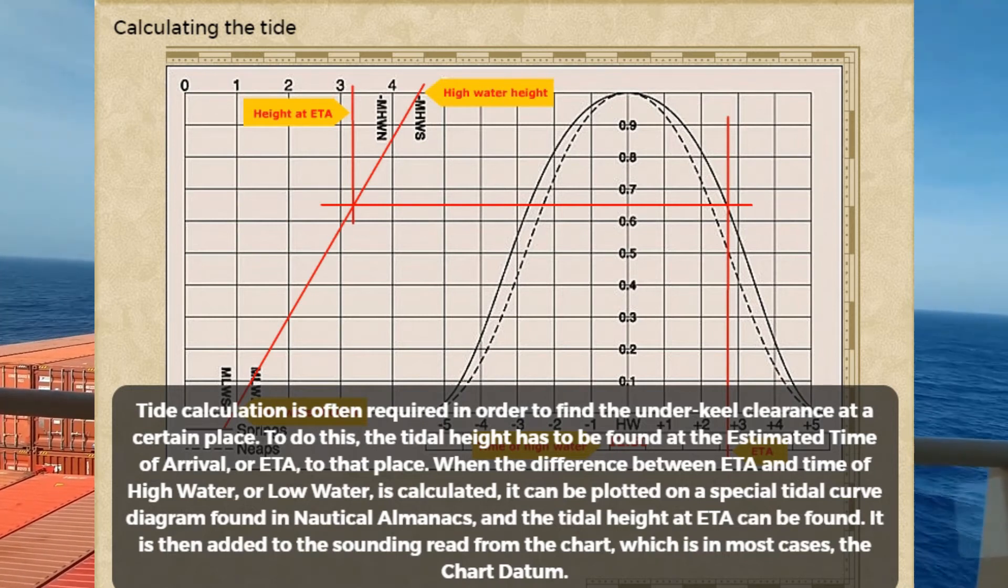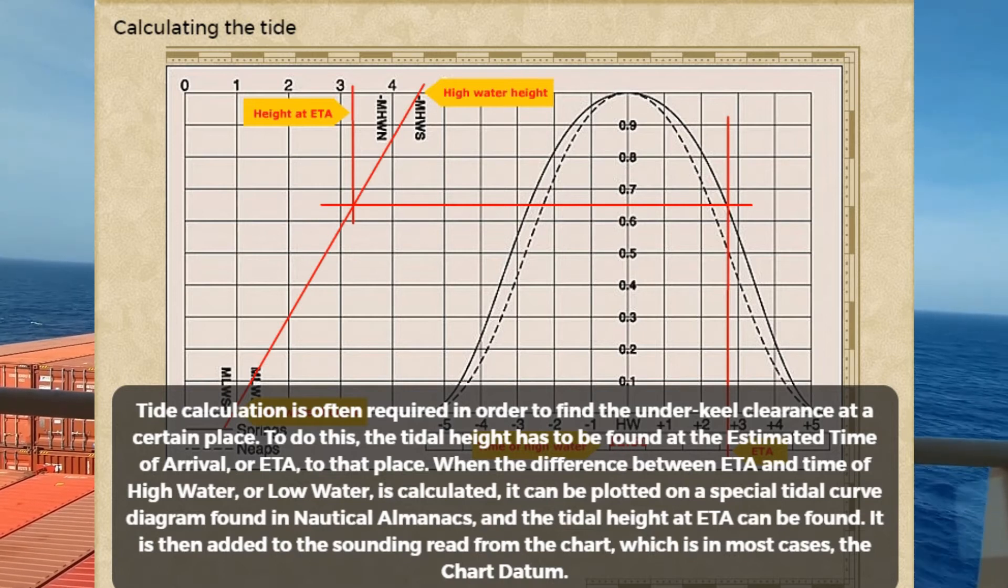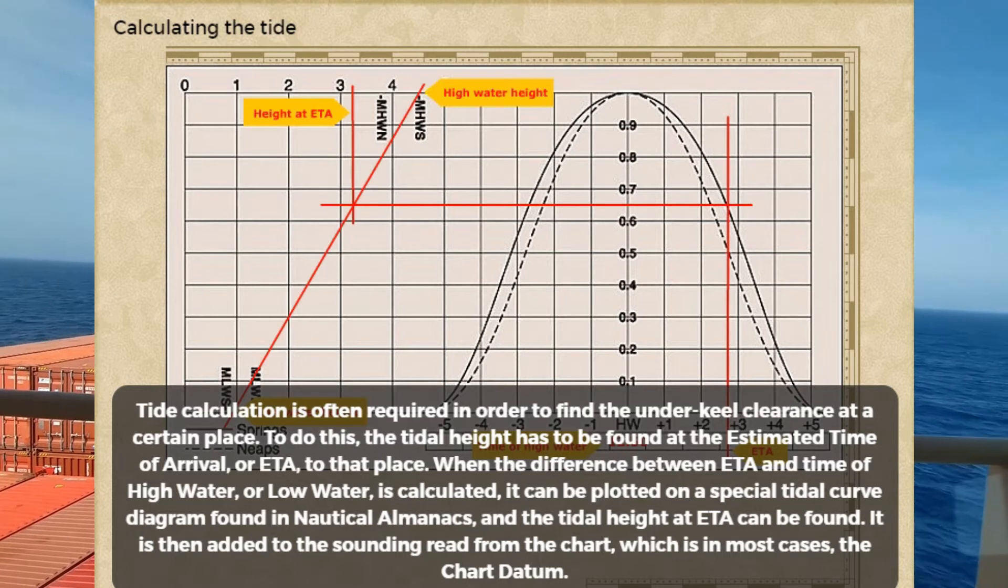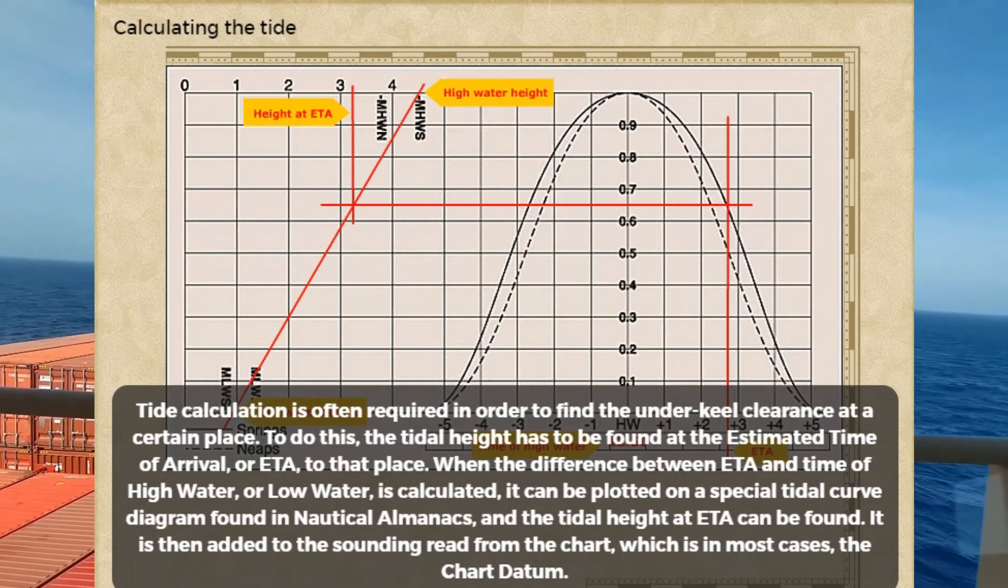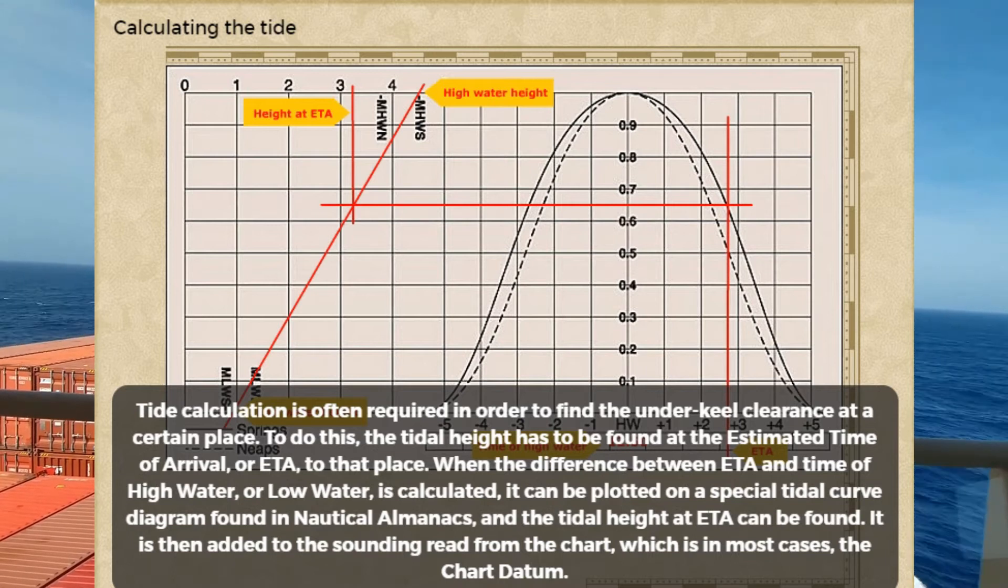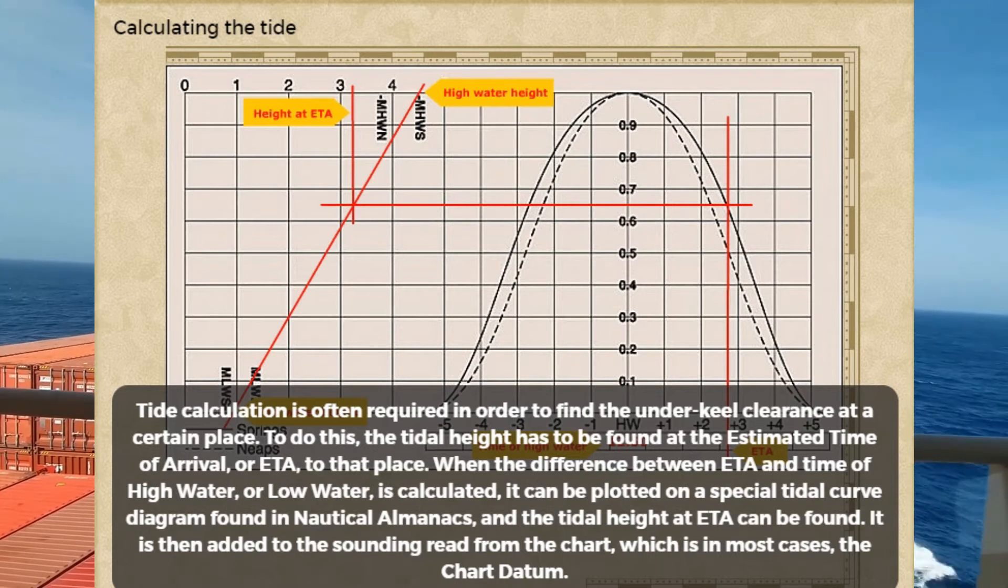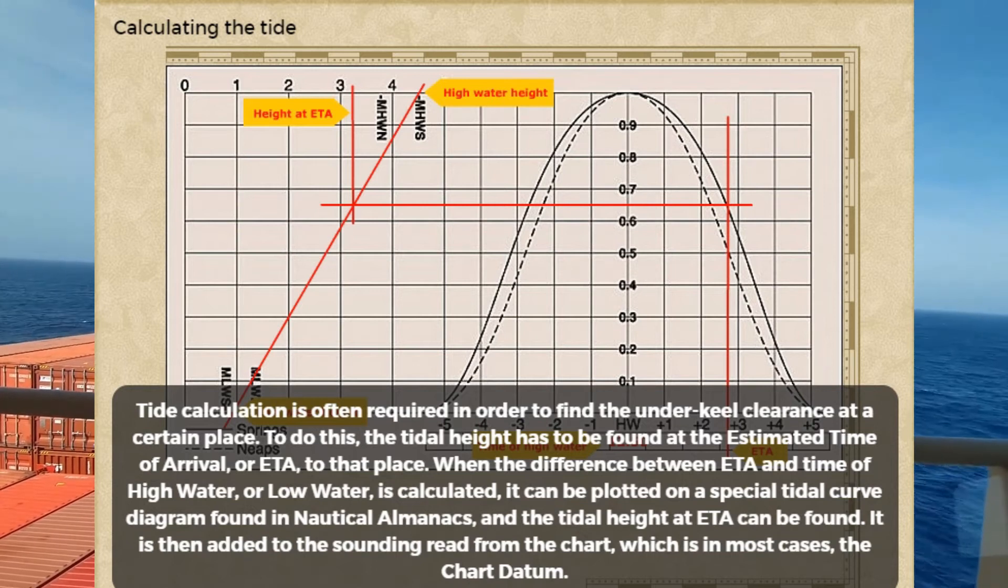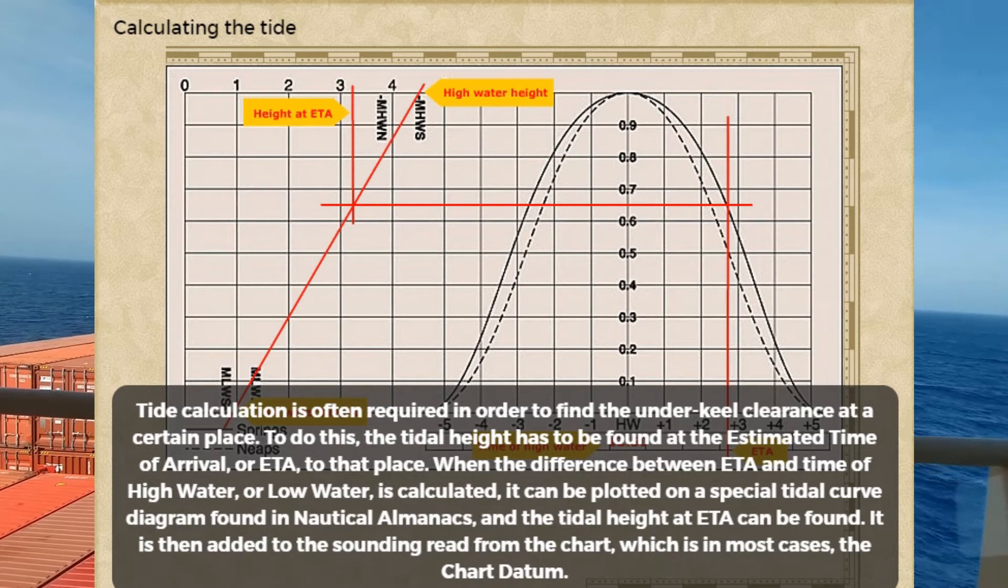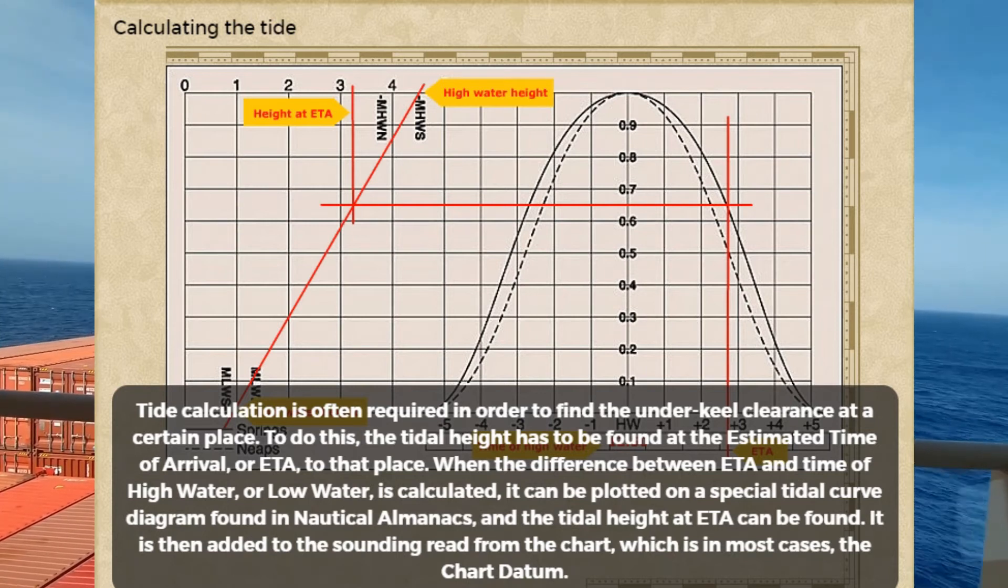When the difference between estimated time of arrival and time of high water or low water is calculated, it can be plotted on a special tidal curve diagram found in nautical almanacs, and the tidal height at estimated time of arrival can be found. It is then added to the sounding read from the chart, which is in most cases the chart datum.